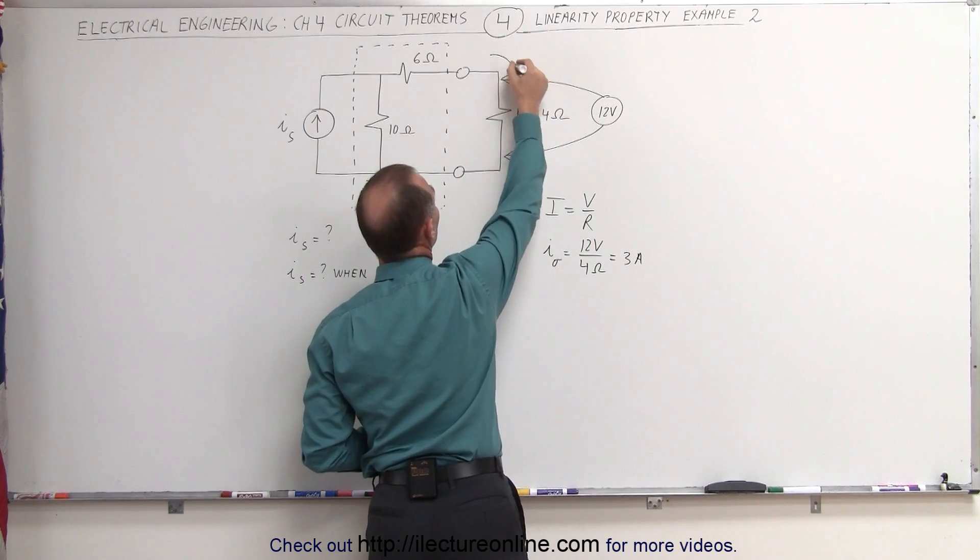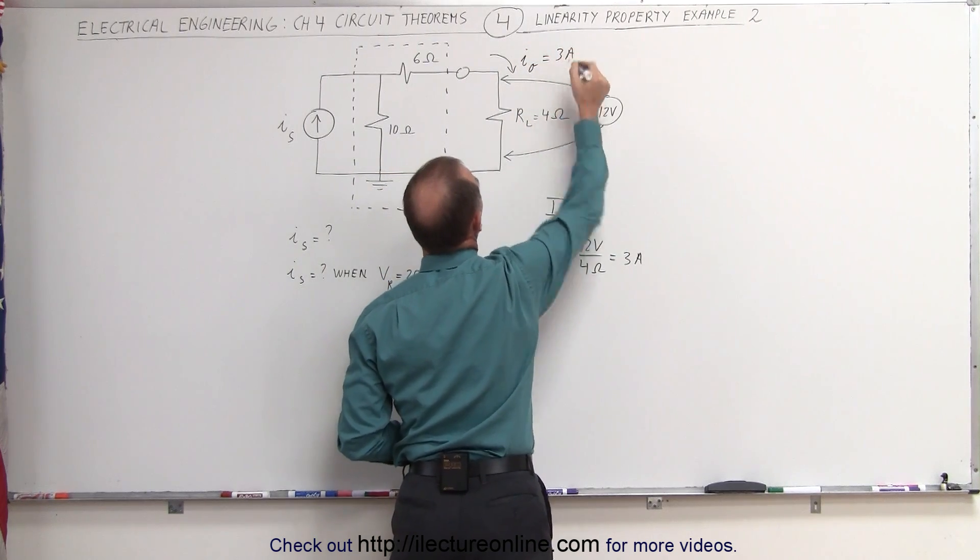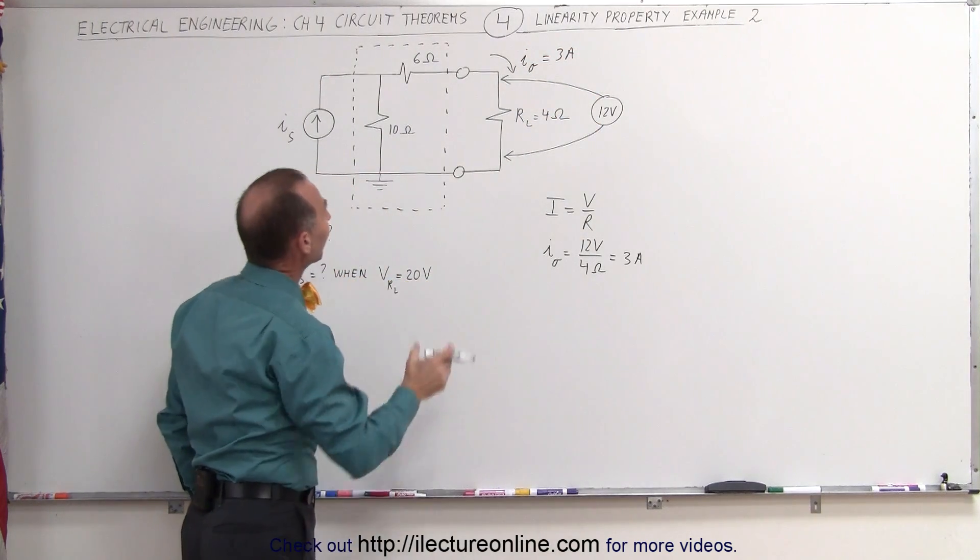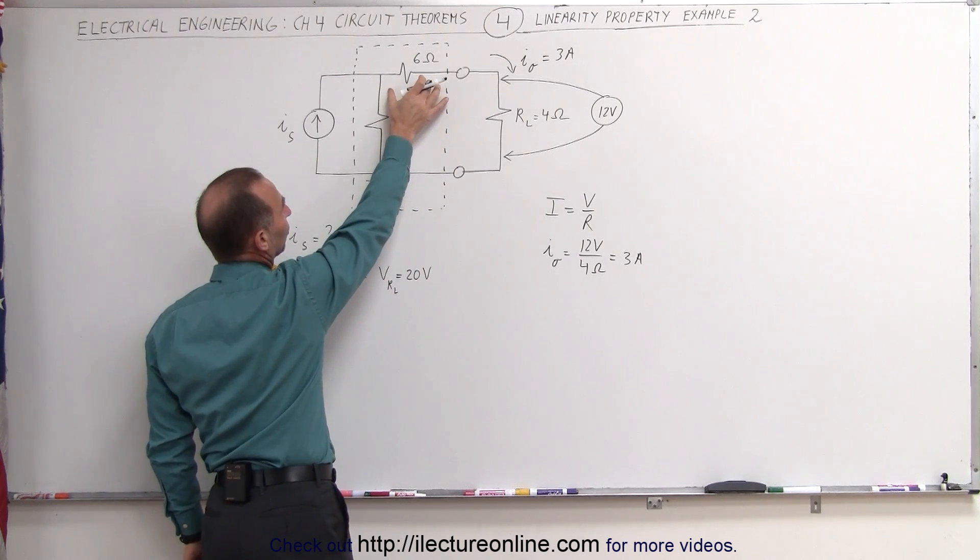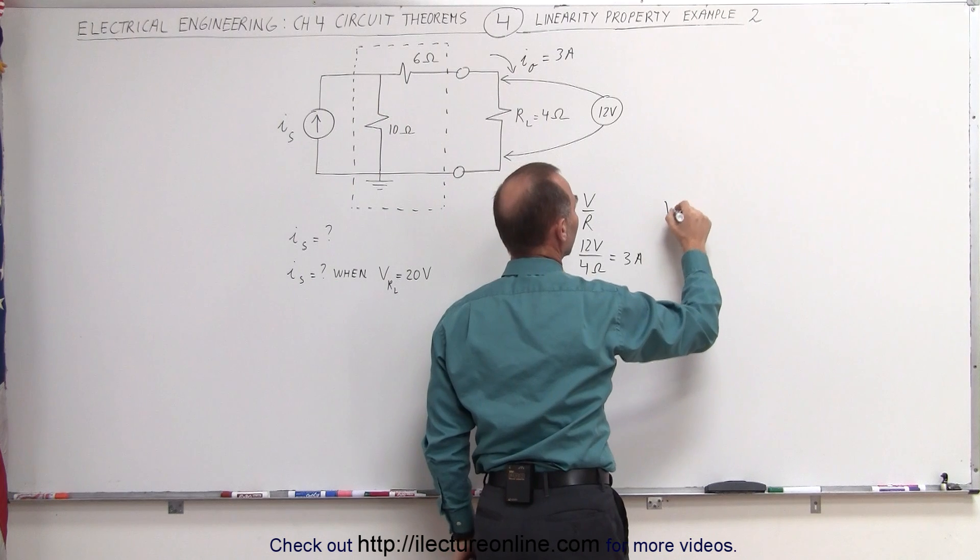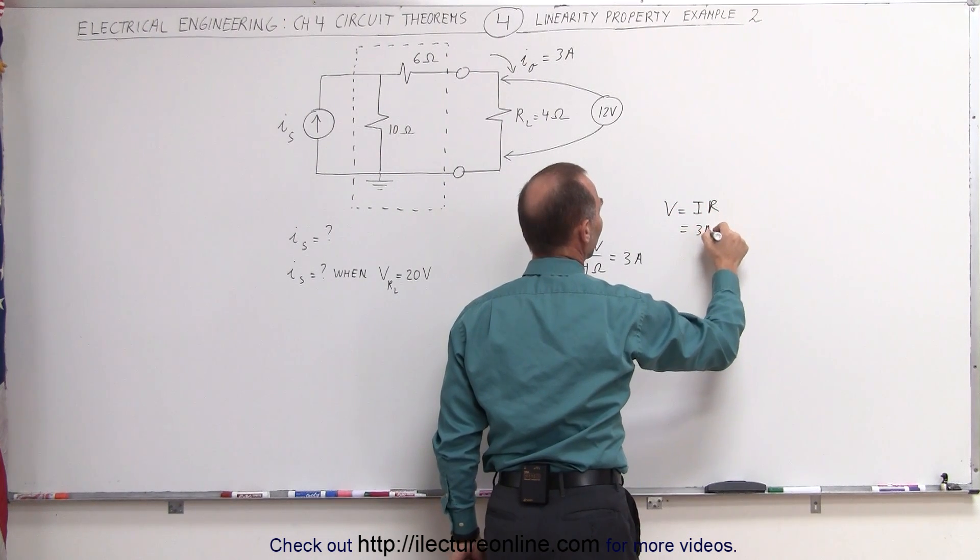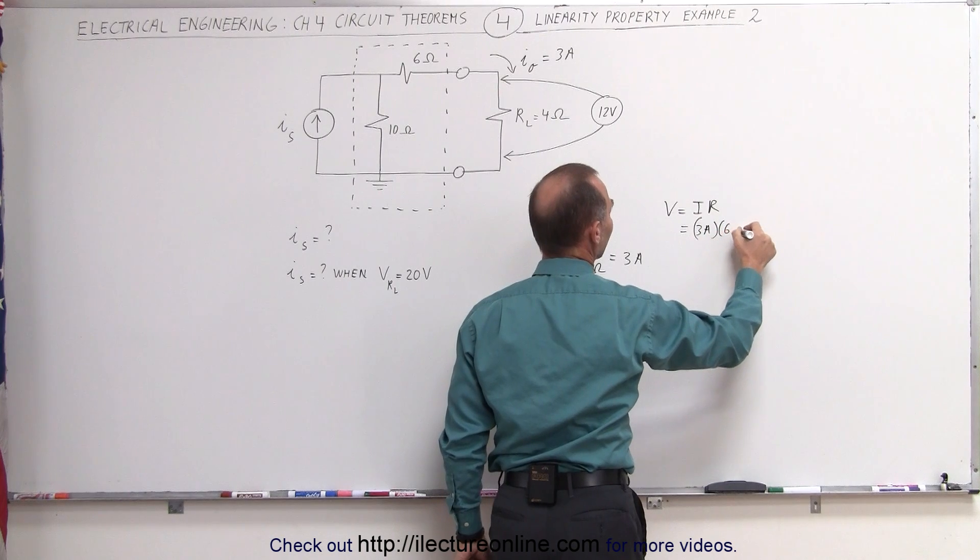So we know that there's a 3 amp current, I sub O equals 3 amps. Now we can find the voltage drop across this resistor right here, because we know again that the voltage drop using Ohm's law is equal to the current times the resistance. The current is 3 amps to the 6 ohm resistor times 6 ohms.